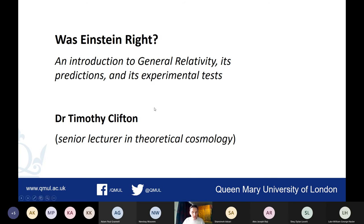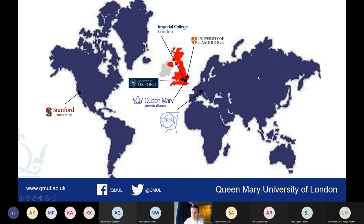My name is Dr. Timothy Clifton. I'm a senior lecturer in theoretical cosmology. Most of you probably know me from my second year lectures in quantum mechanics A, and perhaps one or two of you might also have come to my lectures in the fourth year if you chose to study relativity and gravitation. Let me introduce myself a little bit more. This is my career history so far - I started at the University of Cambridge, where I did my PhD.